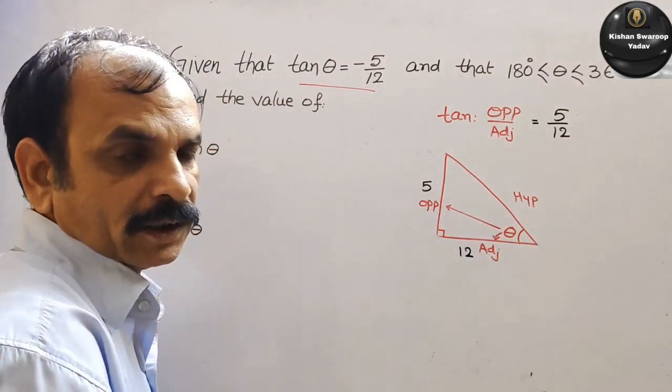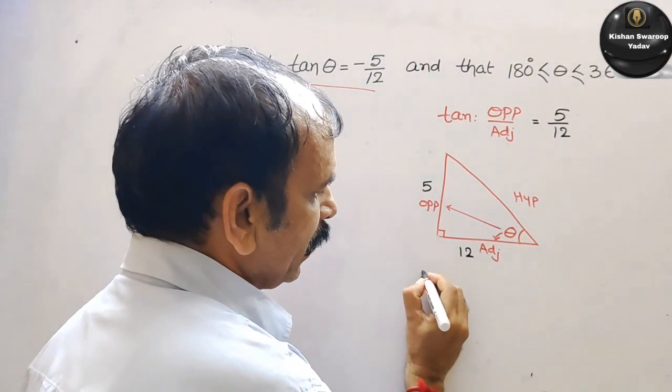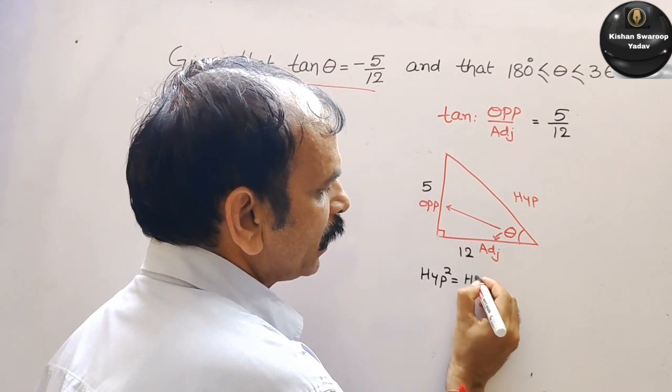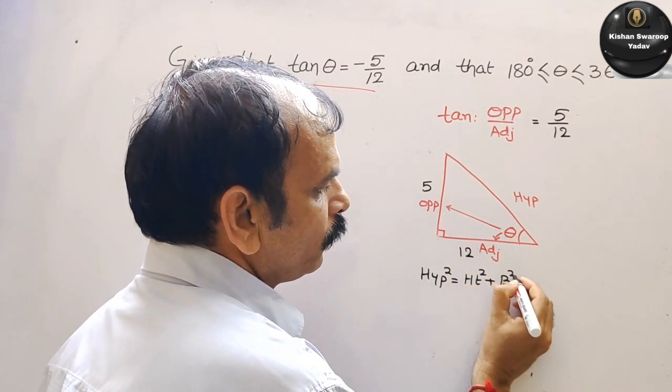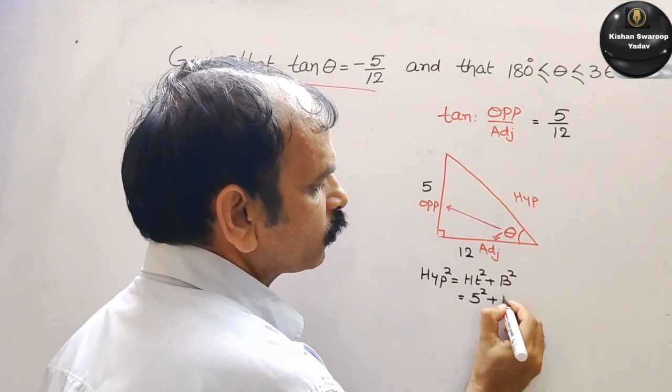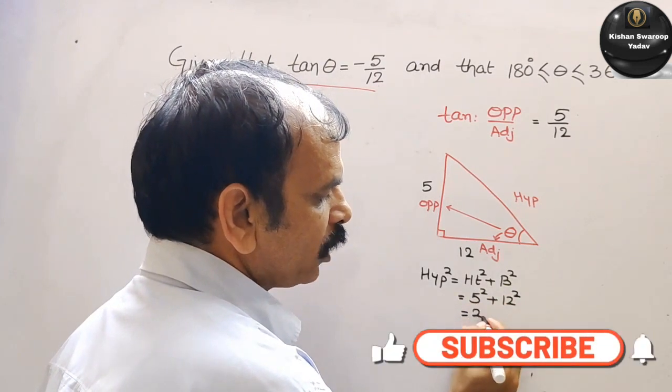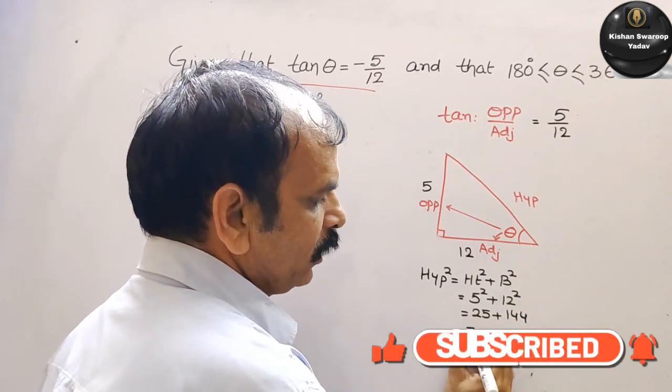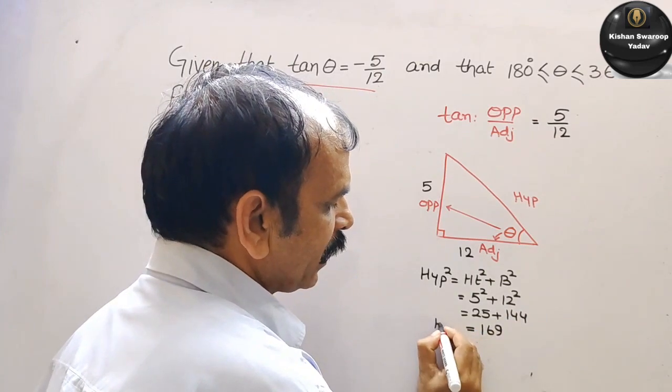We will find out hypotenuse by Pythagoras theorem. What is that? Hypotenuse square is equal to height square plus base square. That is equal to, we can say it is 5 square plus 12 square. So now 5 square is 25 plus 144, 12 square is 144. That is equal to 169. That is hypotenuse square.